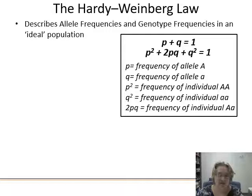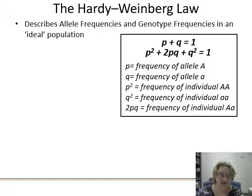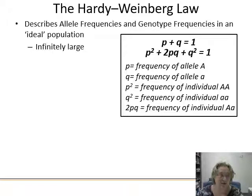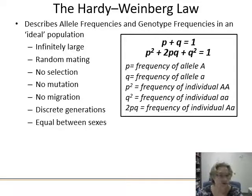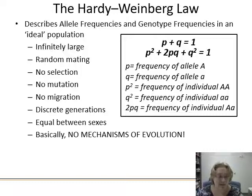So this is where we get into the Hardy-Weinberg law. In the top part, p is the frequency of our dominant allele, q is the frequency of our recessive allele. We look at the genotype frequencies — the way alleles are assembling into genotypes in our ideal population. p-squared is the frequency of an individual that got two copies of the dominant allele, q-squared is the frequency of those with two copies of the recessive allele, and 2pq is the frequency of individuals that got one dominant and one recessive allele.